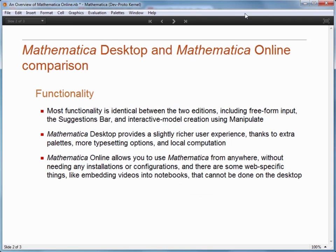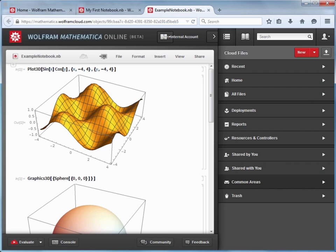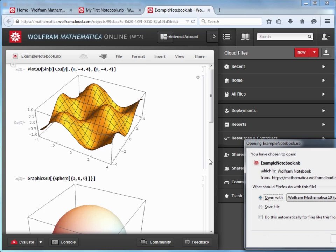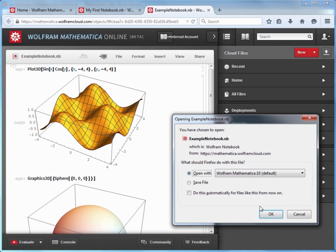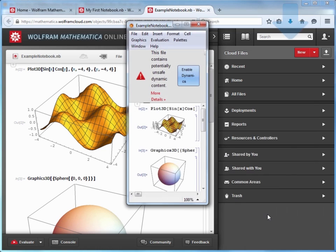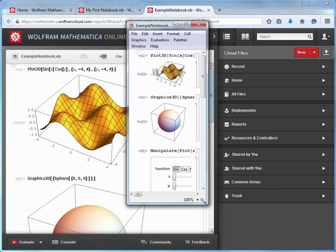There are some other features that help you move between platforms as well. For example, if I go back to Mathematica Online and open the file I just uploaded, I can click this icon at the top with the arrow pointing to the computer display. By doing so, the file is downloaded from the cloud to my local hard disk, and then I am prompted to open it up in my desktop instance of Mathematica.